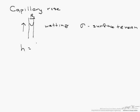is 2 times the surface tension times the cosine of the angle between the fluid and the tube, divided by the specific weight of the liquid times the radius of the tube.